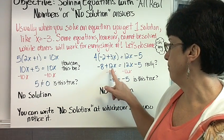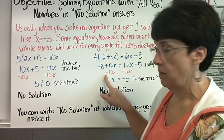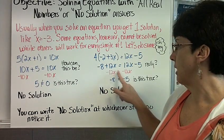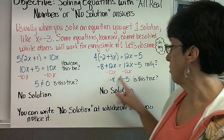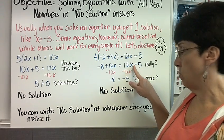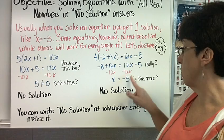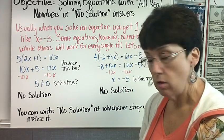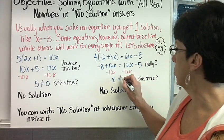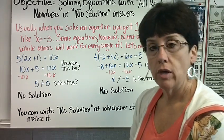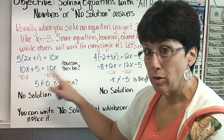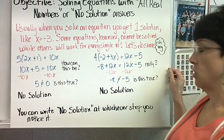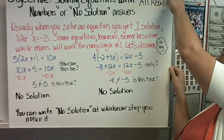So I subtract, they're the same. I'm going to subtract this side. Minus 12x minus 12x. I get negative 8 because plus 12x minus 12x is 0. And plus 12x minus 12x is 0 equals negative 5. Is this true? No. It's not true. So it's no solution. So when you have the same variable term but different numbers, that's no solution. And you can write no solution in whichever step you notice it.